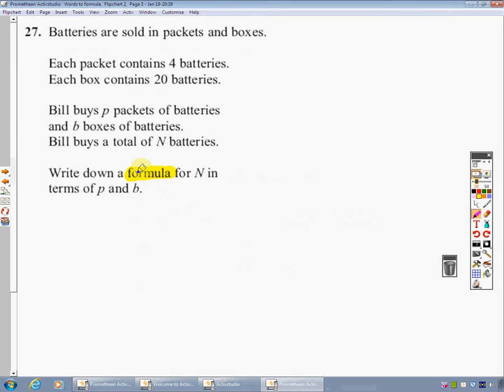Okay, welcome back. Batteries are sold in packets and boxes. Each packet contains four batteries. Each box contains 20 batteries. So in my head here, I'm thinking I've got small little packets of stuff and I've also got big stuff as well. So I'm trying to help that a bit. So I might actually do this thing because I'm writing where I've got four of them in a small thing, the packets - let's put a p by there. And I've got 20 in a big box of them. So I'll put a b there. Just to visualize it, help myself a bit. It says, Bill buys p packets of batteries and b boxes of batteries. Bill buys a total of n batteries. That's quite a lot of information there.